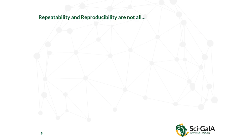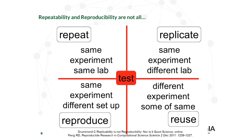Besides repeatability and reproducibility, which are the fundamental pillars of the scientific method, there are other important things. So besides repeat and reproduce, science should also enable you to reuse. The ultimate goal of producing science is that other people can take over from what you have done in your analysis, get access to all aspects of your scientific research, carry on, extend the analysis, and make additional results.